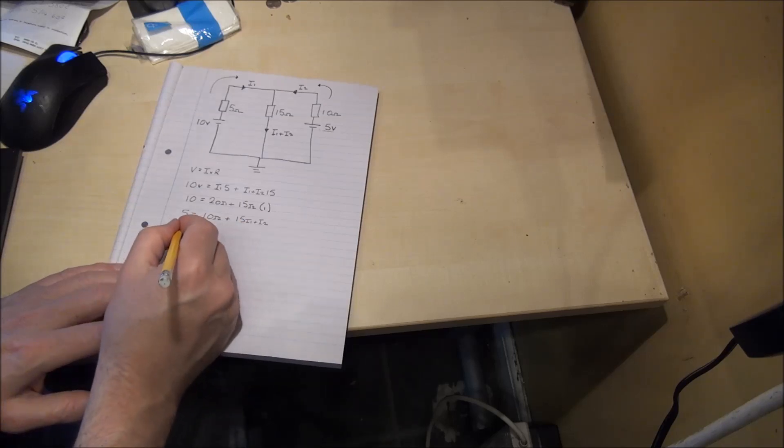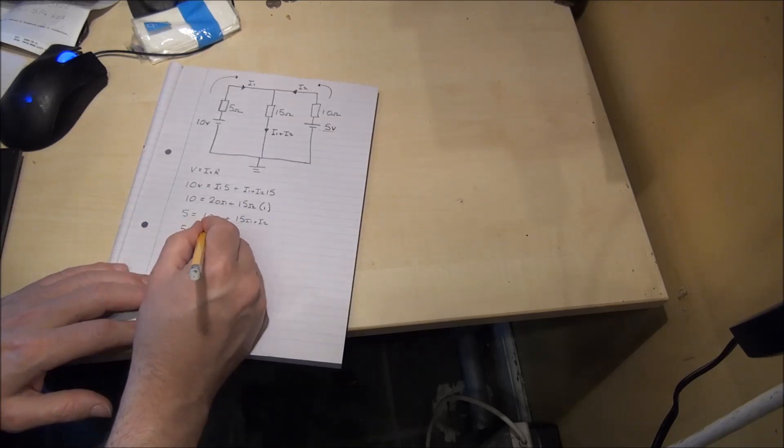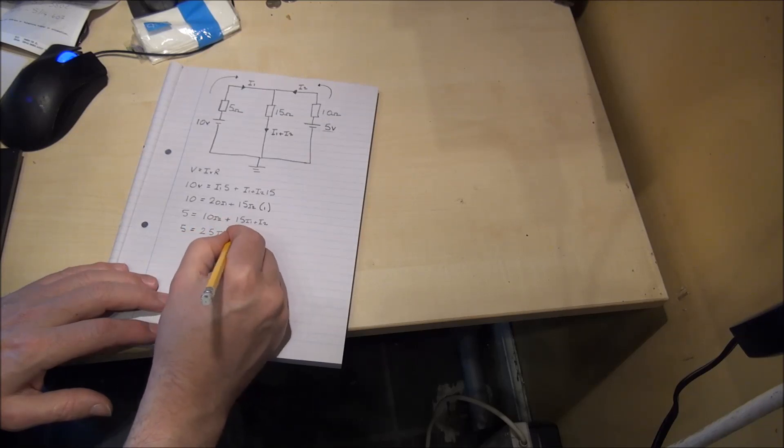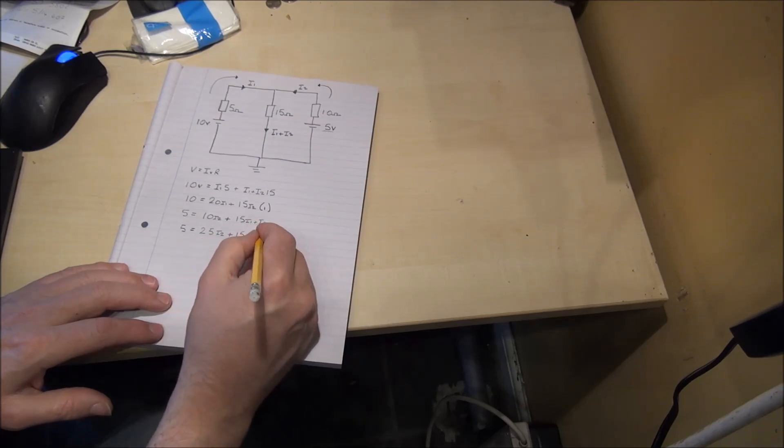And once again we simplify, 5 is equal to 25 I2 plus 15 I1. And in brackets we put a 2.